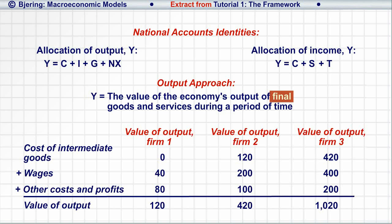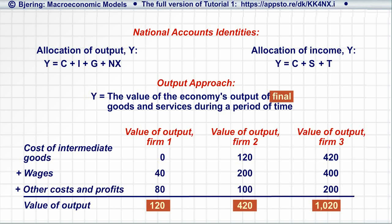In the table, the bottom line indicates the value of the output of three firms, computed for each firm as the sum of its production costs and the firm's profits.